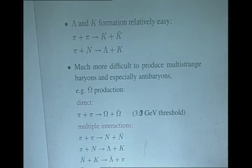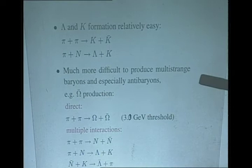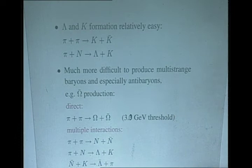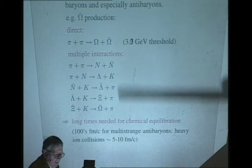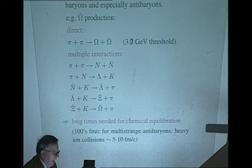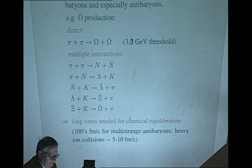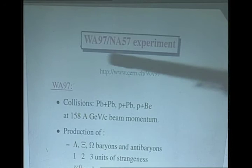If there is no quark-gluon plasma, you have a fireball full of hadrons which rescat violently. It would be easy to form a Lambda and Kaos, but much more difficult to produce multi-strange baryons, and especially anti-baryons. If we make the example of the Omega anti-Omega, either we produce it by direct interaction with a threshold of 3 GeV, or you have to go through a series of interactions. In the end you will have an anti-Omega, but that will take long time, of the order of 100 Fermi for multi-strange anti-baryons, longer than the total time involved in the process.